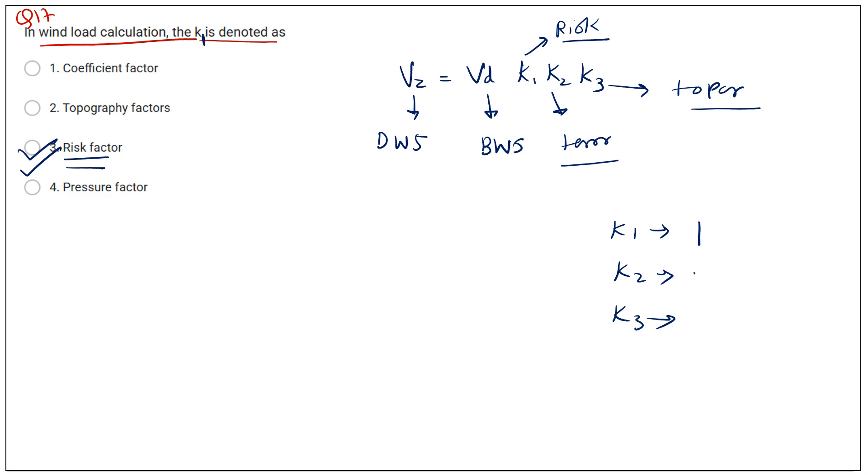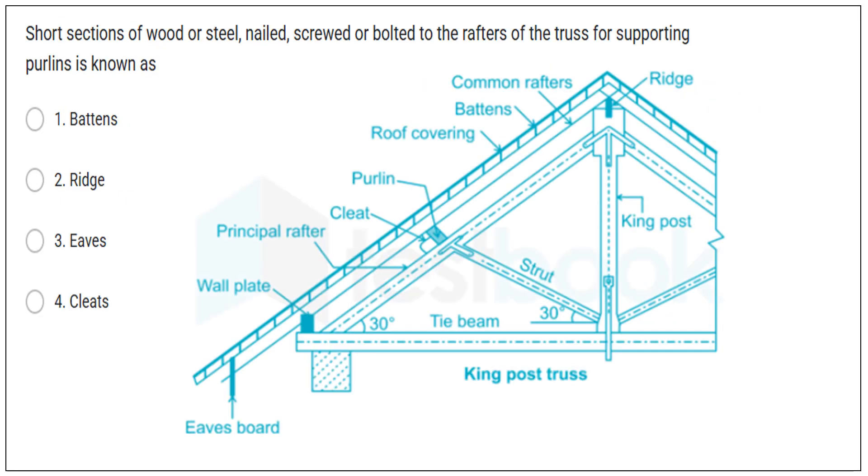The next question, question number 18. Short section of wood or steel nailed, screwed or bolted to the rafters of the truss for supporting the purdlings is known as. So in the previous question, I mentioned that for supporting purdlings, we use cleats. So cleats are given in the fourth option. Fourth option is correct here.